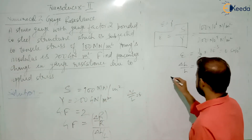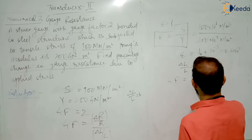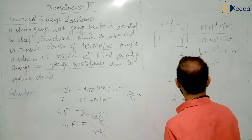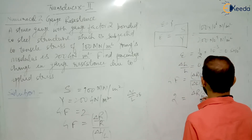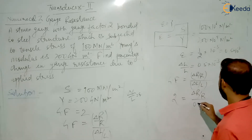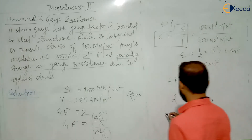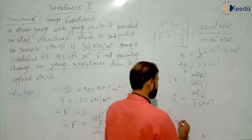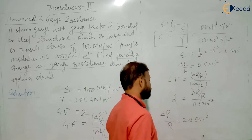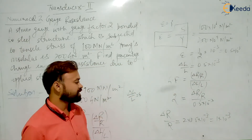Now apply the formula: gauge factor equals delta R by R divided by delta L by L. Gauge factor is given as 2, equals delta R by R — which is what we need to calculate — divided by delta L by L, which we just calculated as 0.5 into 10 to the power minus 3. From here, delta R by R will be equal to 2 into 0.5 into 10 to the power minus 3, which gives 1 into 10 to the power minus 3. That is your change in resistance.